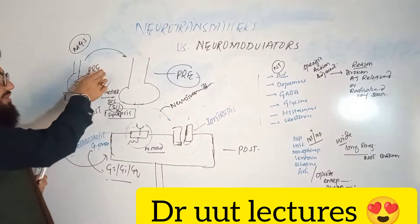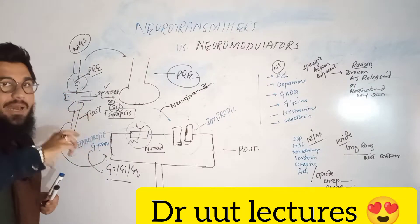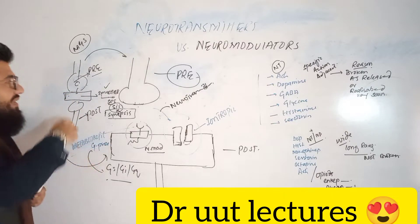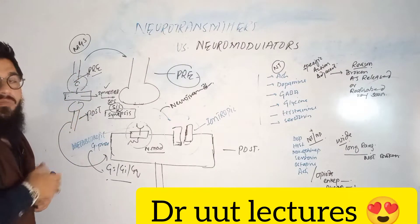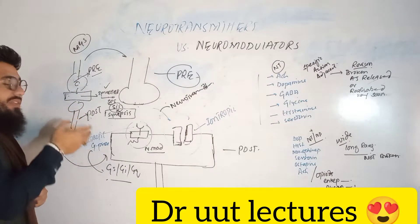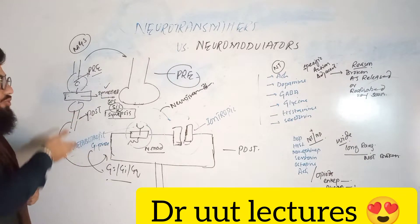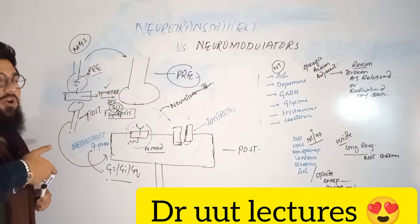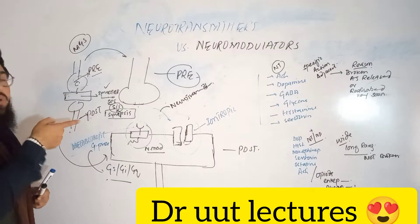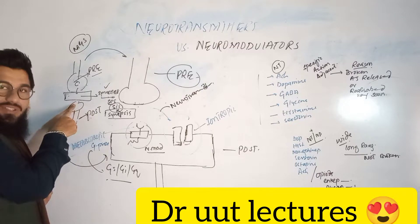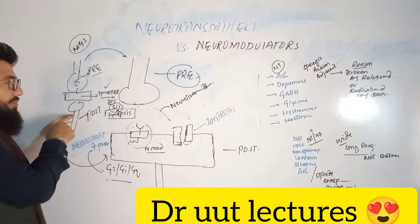The chemical is released from the presynaptic neuron and comes into the synapse — the space between the two neurons. Then that chemical binds with the next neuron, and accordingly the message is relayed to this neuron, which then shows the action according to the chemical conveying the message. This chemical stimulates certain kinds of receptors, which then tell the neuron to do its job.